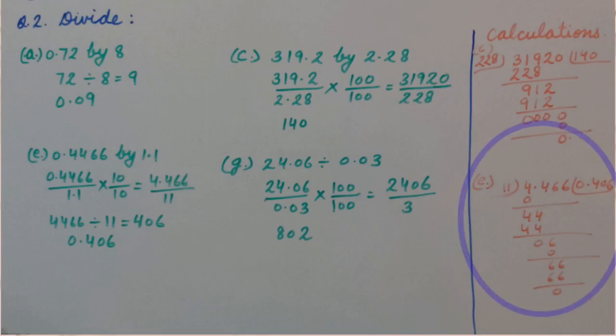Part G: 24.06 divided by 0.03. First of all, we will remove the decimal from the divisor by multiplying by 100. So we get 2,406 divided by 3. The answer is 802.